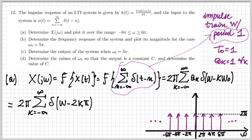Therefore I can write the Fourier transform as 2π · Σ δ(ω − 2kπ). If I represent it and plot over the range minus 6π to 6π as the exercise asks, this is what it looks like — it's many deltas, all of them with amplitude 2π, spaced by the quantity 2π in the frequency domain ω.